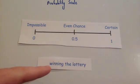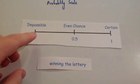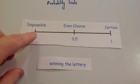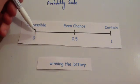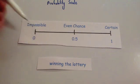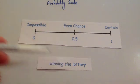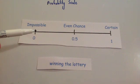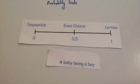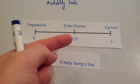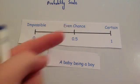Winning the lottery is very, very unlikely, so it would be just to the right of impossible — somewhere right beside 0 on the scale. A baby being a boy — given that babies can either be boys or girls, the chance of being a boy is going to be 0.5, or an even chance.